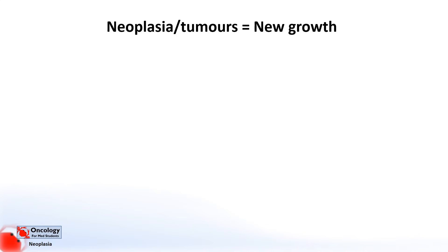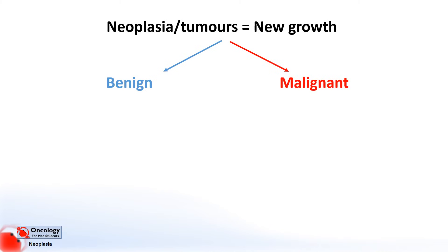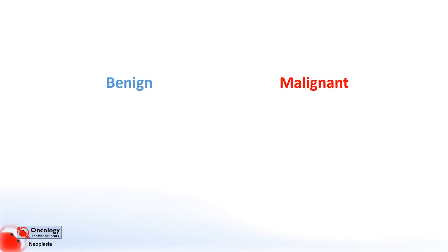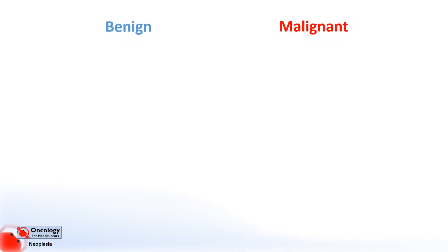Last time we learned that neoplasms, or new growths, also known as tumors, can be benign or malignant. Cancer is another word for malignant neoplasms. But what exactly makes a neoplasm malignant, or in other words cancerous? What I want to cover in this lesson is four key areas in which benign and malignant neoplasms or tumors differ.